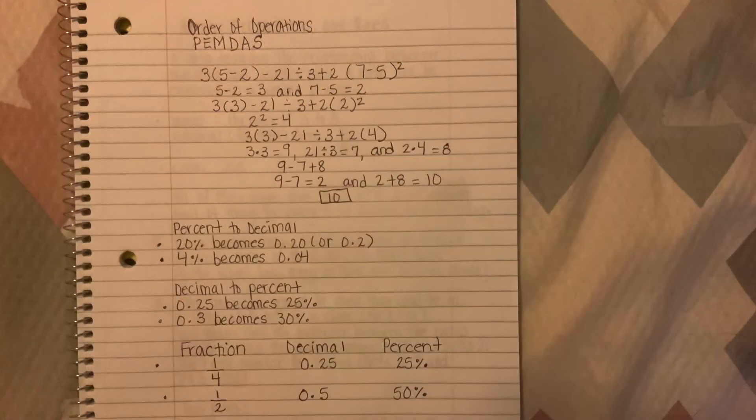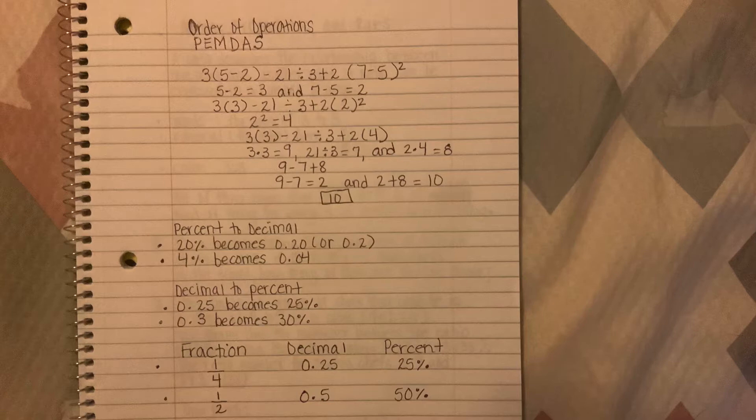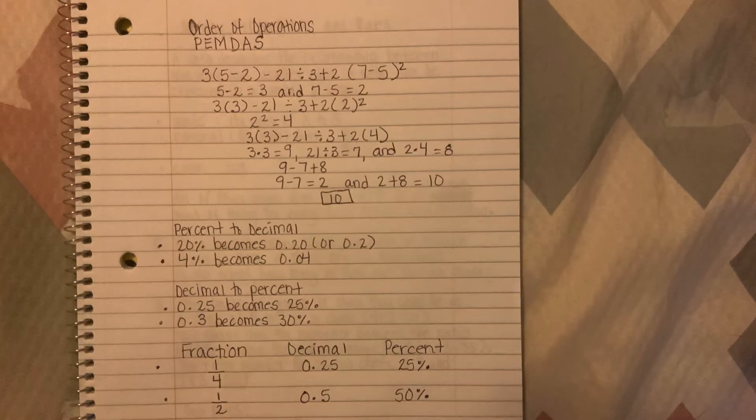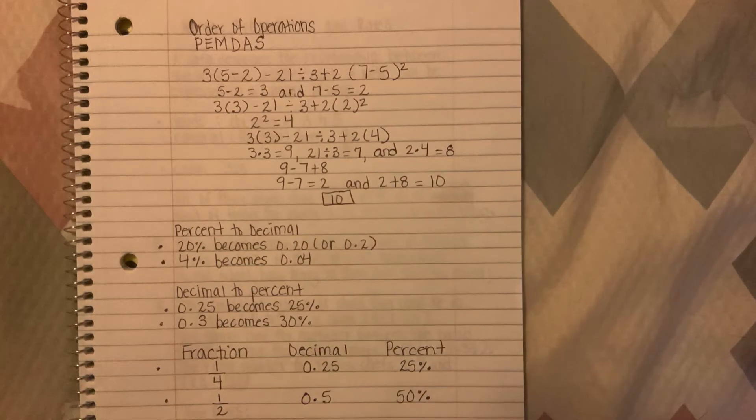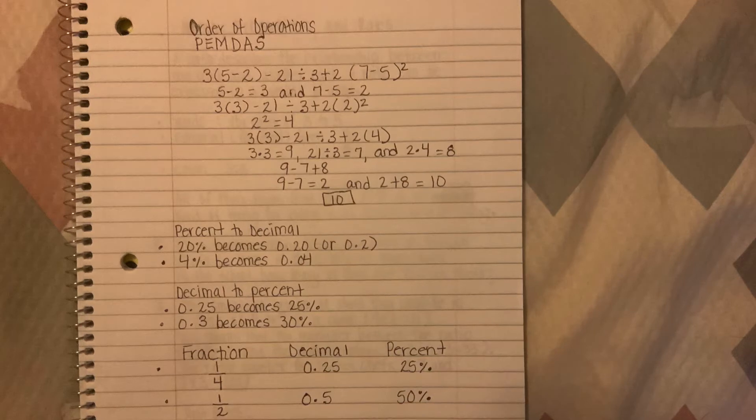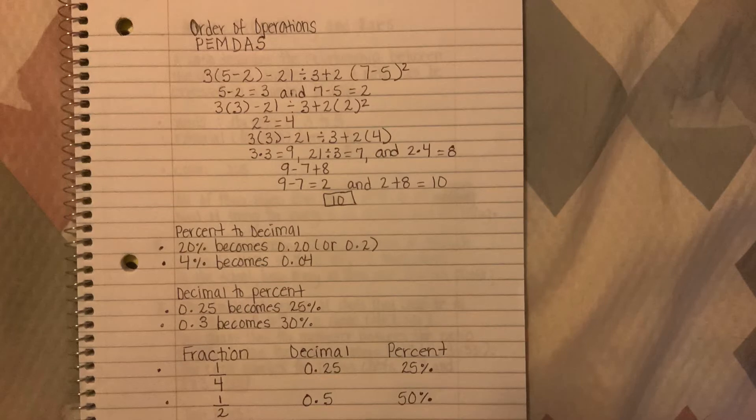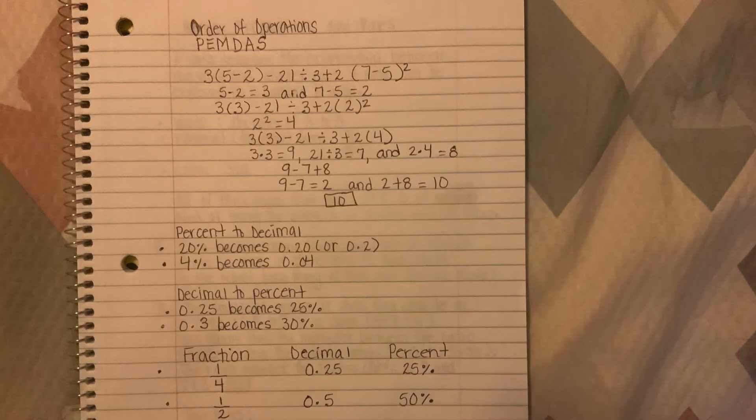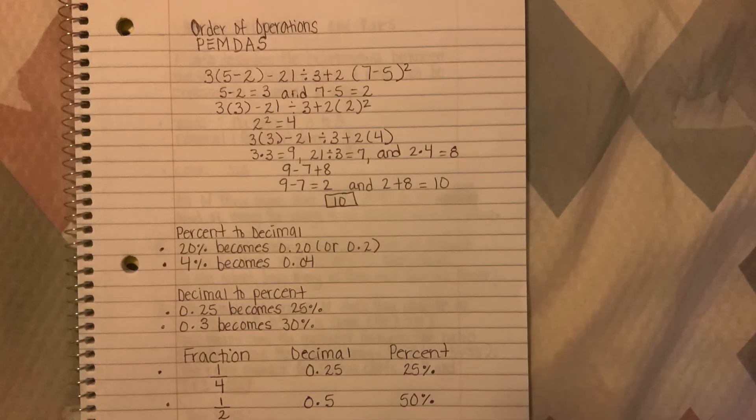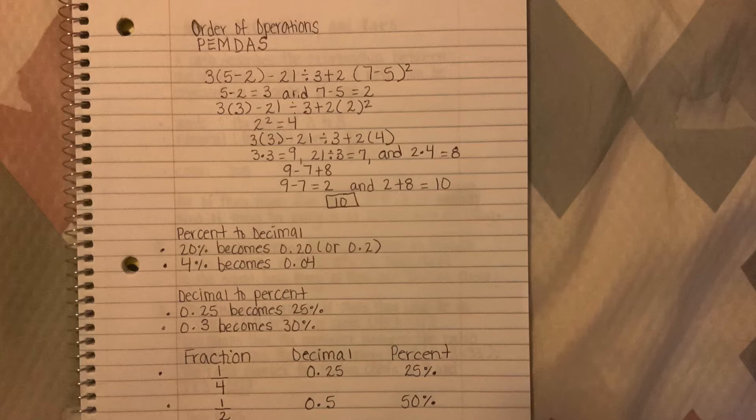We are going to start off with order of operations. When dealing with order of operations we have to do it in a certain order, so we convert that to PEMDAS. The P stands for parentheses, E stands for exponents, M stands for multiplication, D stands for division, A stands for addition, and S stands for subtraction. In school we learned it as please excuse my dear aunt Sally.